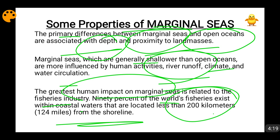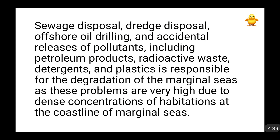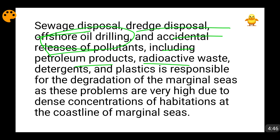Fishermen generally don't go beyond about 200 kilometres — in fact, they typically go only 5–10 kilometres inside the sea to catch fish. So marginal seas are heavily affected by the fishing industry. Additionally, sewage disposal, dredge disposal, offshore oil drilling, accidental release of pollutants including petroleum products, radioactive waste, and plastic are all responsible for the degradation of marginal seas. When all of these things are thrown into the sea, the concentration of pollutants in the water increases.